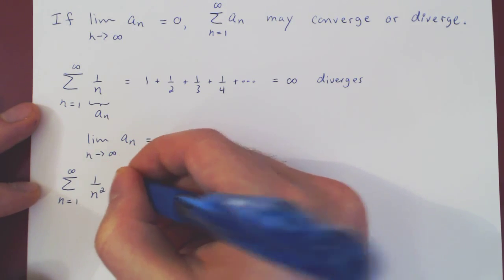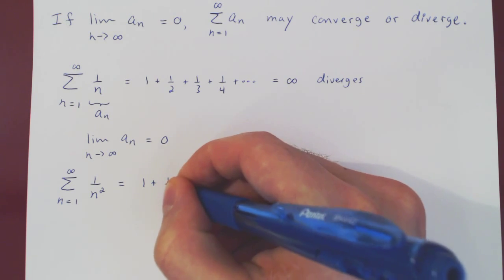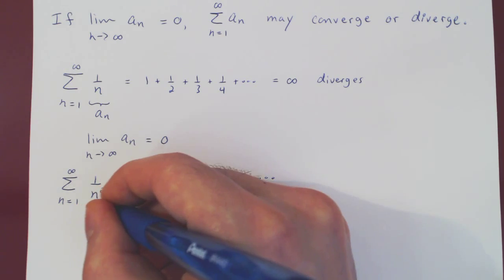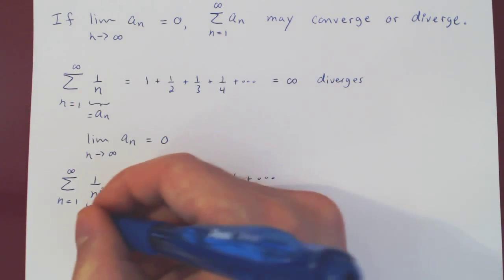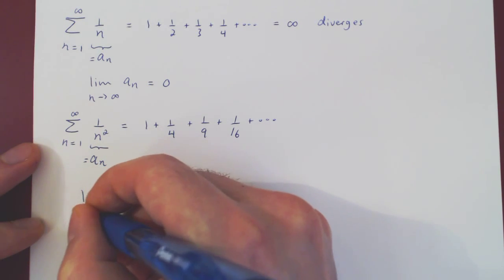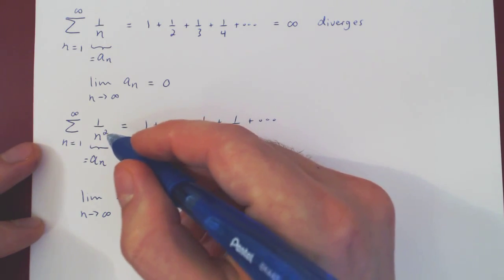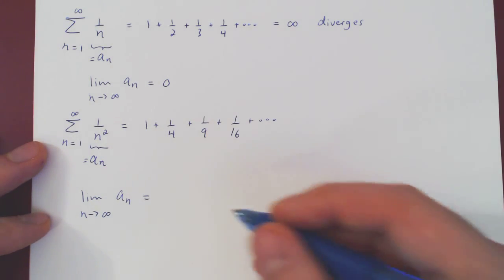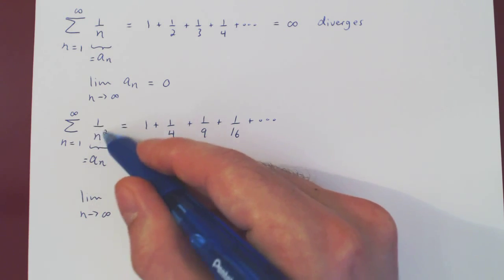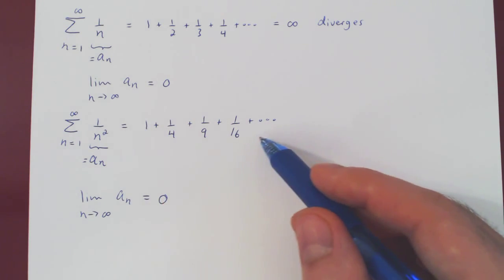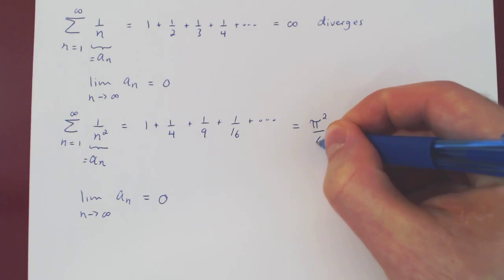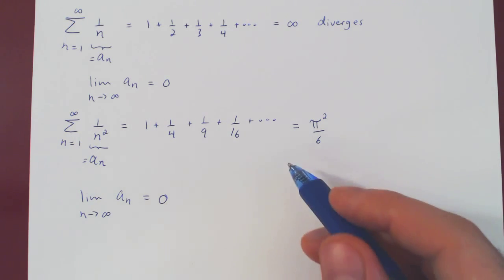What about an example where we have convergence? If we sum 1 over n squared as n goes from 1 to infinity — that is 1 plus 1 over 4 plus 1 over 9 plus 1 over 16 and so on — the corresponding sequence is 1 over n squared, and the limit as n goes to infinity of aₙ is again 0. We have shown in the past that this series does converge, and far less obvious is that it converges to exactly π² over 6.